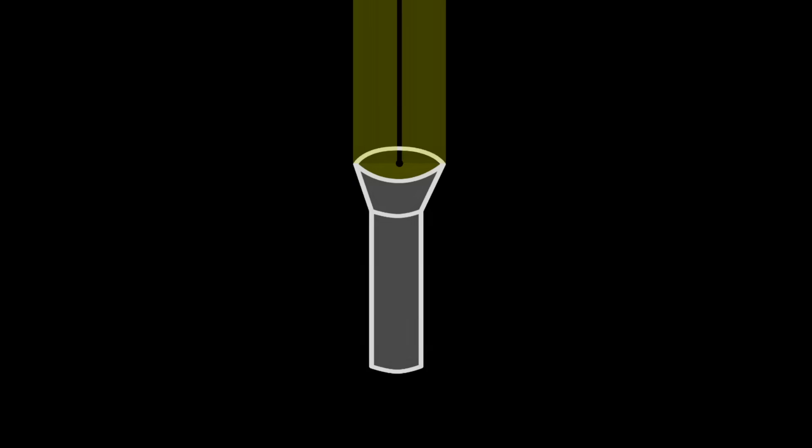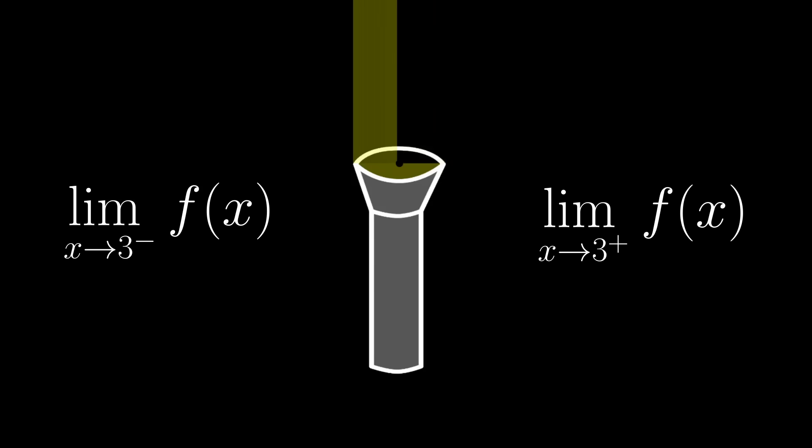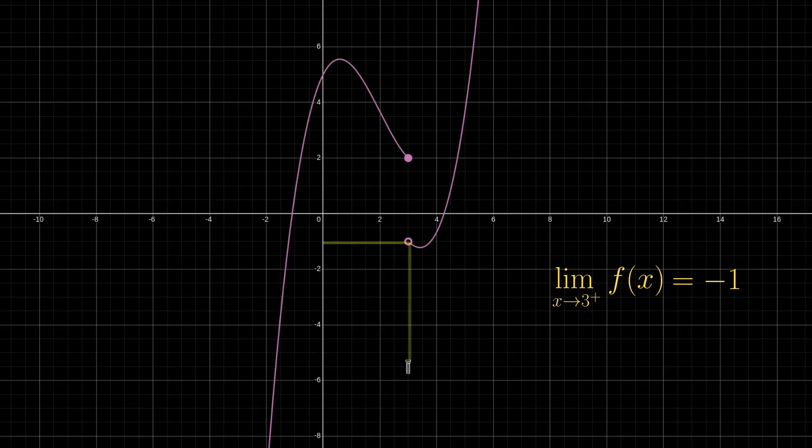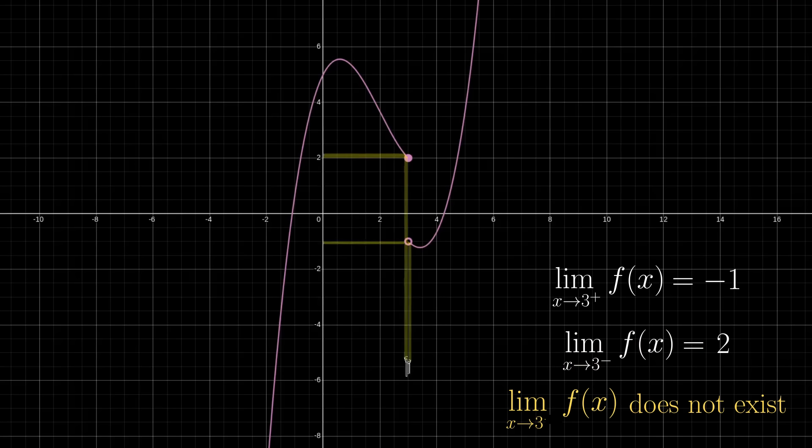But that's a little unsatisfying because it really feels like there's two limits. So what we can do in this case is use a special one-sided flashlight, which you might know as the right or left-sided limit. If you train the right-sided flashlight on the point of discontinuity, you can see that we reach a limiting value of negative 1. Whereas if you use a left-sided flashlight, we instead reach a limiting value of 2. So we can say that the limit as x approaches 3 from the right of f of x is negative 1, and the limit from the left is 2. We still say that the limit as a whole doesn't exist, but it's nice to be able to capture the fact that there is a well-defined limiting behavior from one side or the other.